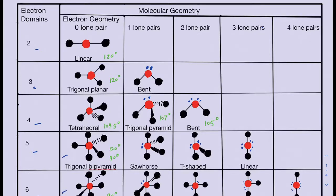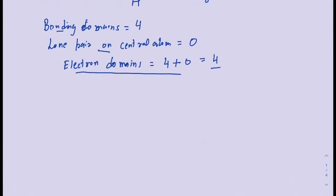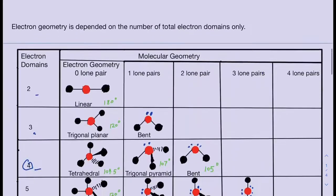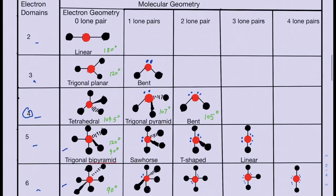The other shapes in the chart are seen but sometimes teachers don't require you to memorize those. For CH4, we have four electron domains total, four bonding domains, and no lone pairs. You move across the chart to where the number of lone pairs is zero, which is the very first column after electron domains.